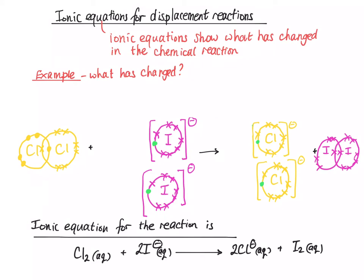And the ionic equation for this is we just write what we see, so Cl₂ plus 2I⁻ goes to 2Cl⁻ plus I₂. And remember to put the state symbols in. So, because this is done in water, everything is AQ.